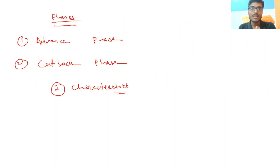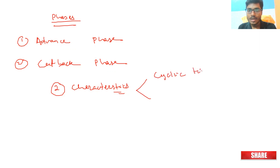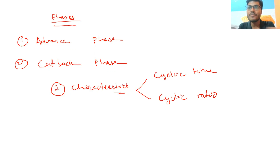Now we'll discuss two key characteristics of surge irrigation: cyclic time and cyclic ratio. Surge irrigation is basically a modification of surface irrigation in which instead of applying irrigation for a longer continuous period, we apply it in shorter intervals. This is why surge irrigation is also known as the on-off method of irrigation. For example, in conventional irrigation we might apply six hours of continuous irrigation, causing percolation and runoff losses.